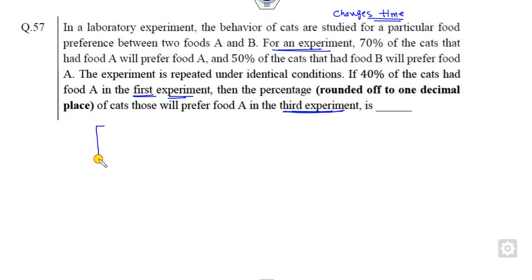Anything which changes with respect to time, you can always solve with the help of a Markov process. Once it is a Markov process, the first target is to write the transition matrix. So let's see what is the size of this matrix. There are two foods, so the transition matrix is food A, food B.